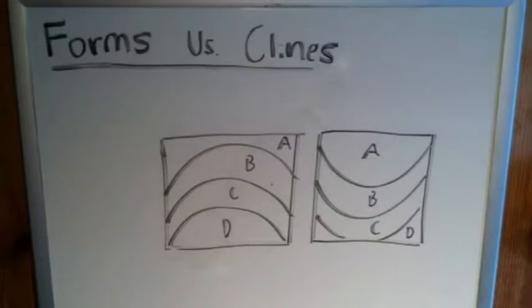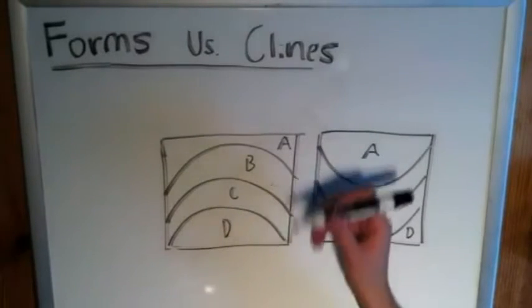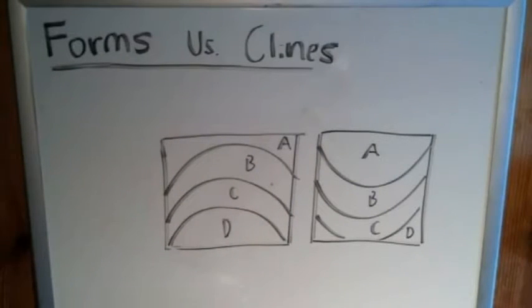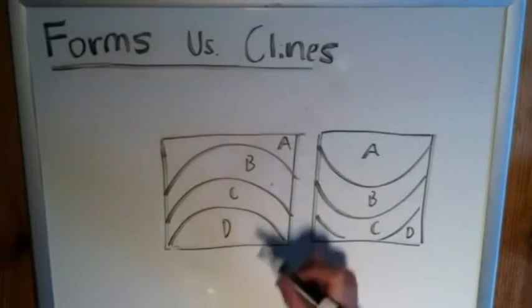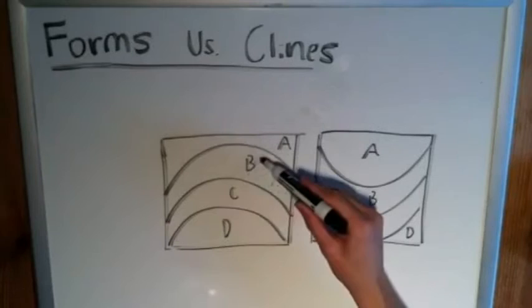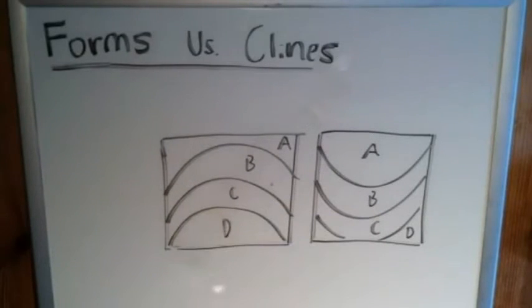So take the one on the left for example. Just by using relative dating methods, such as the law of superposition, we can say that A is the youngest because it's on top, followed by B, followed by C, and then D is the oldest. And that's important.